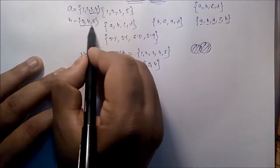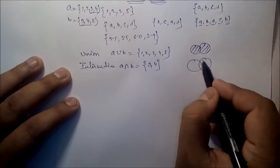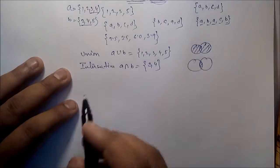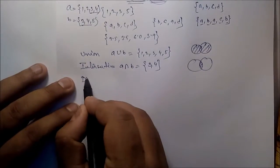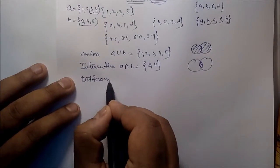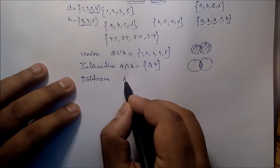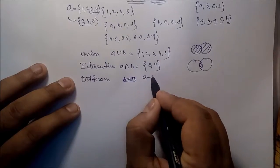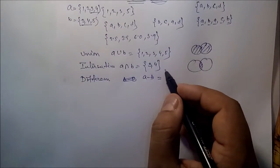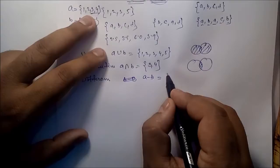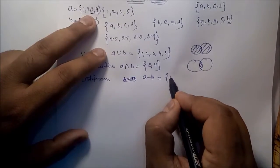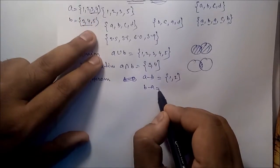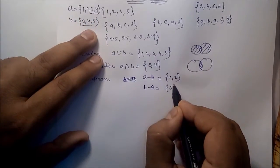Next is difference. A minus B means you remove the common part from A. So the output of A minus B will be {1, 2}. And if it is B minus A, the output will be only {5}.